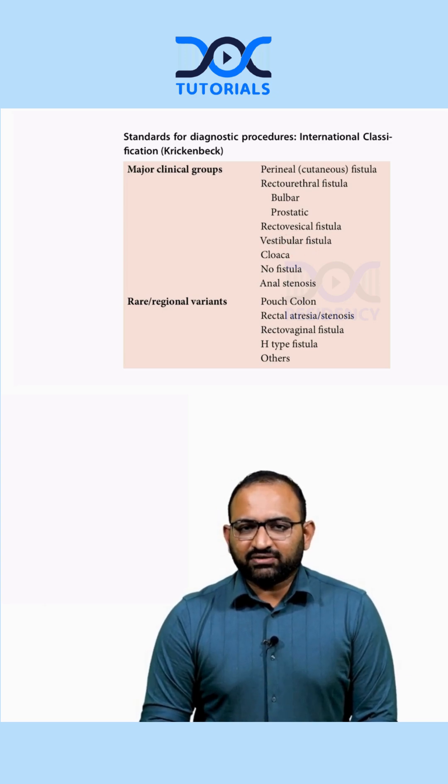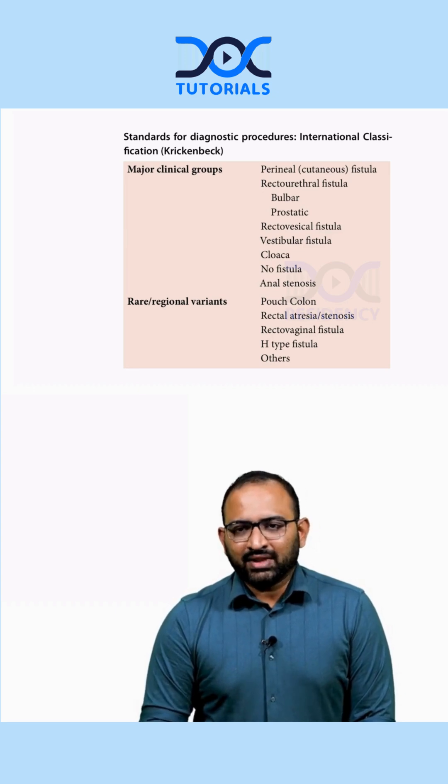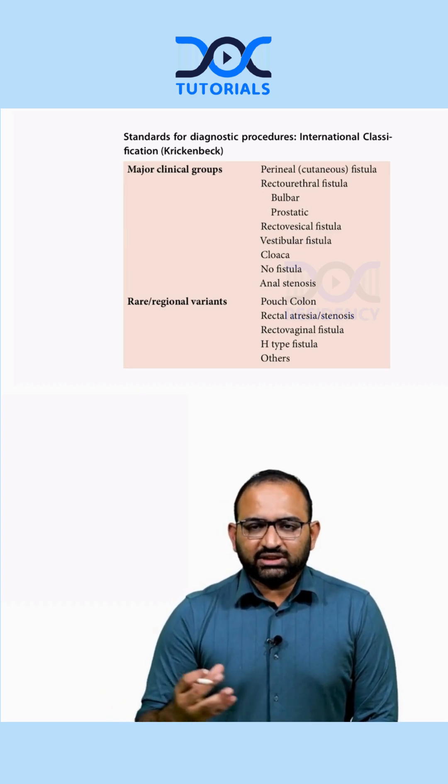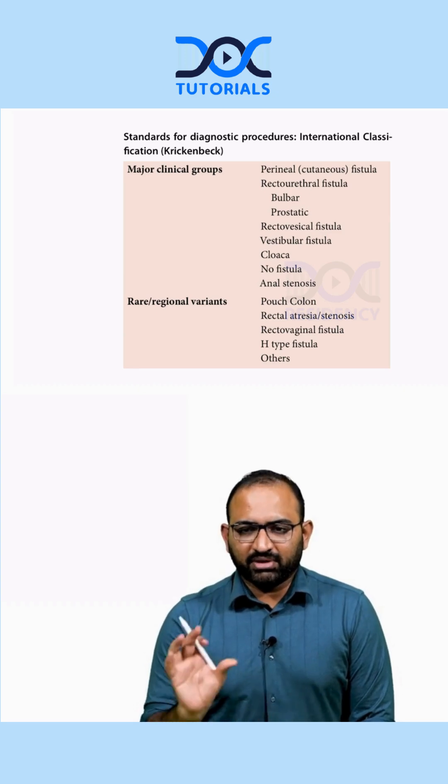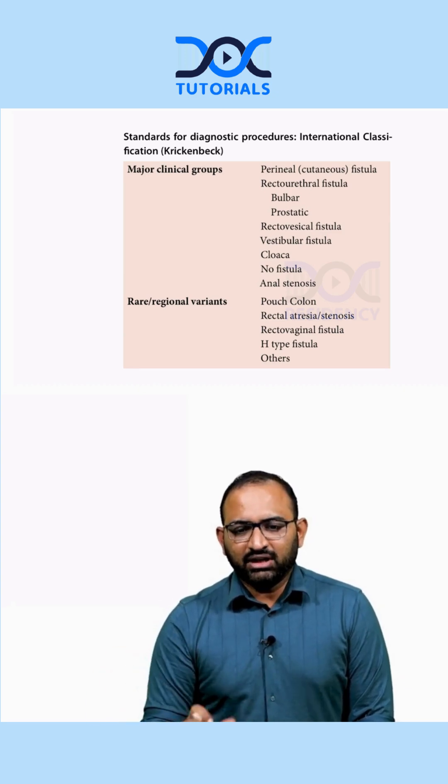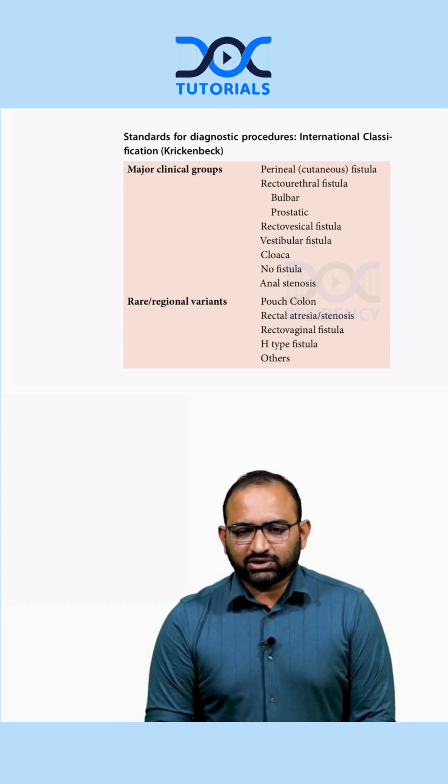Vestibular fistula is seen only in females. The rectum opens into the vestibule, meaning an opening outside the vaginal opening but inside the labia, between the labia but outside the vaginal opening. This is called rectovesibular fistula.